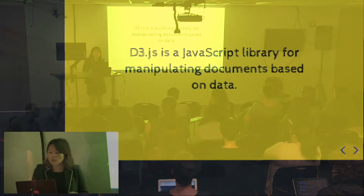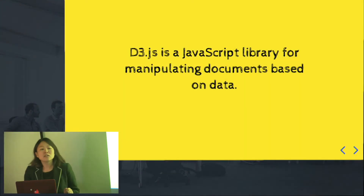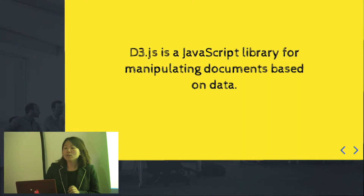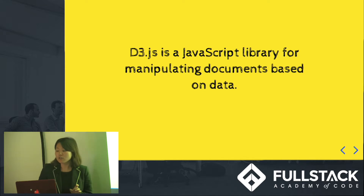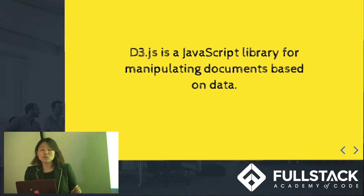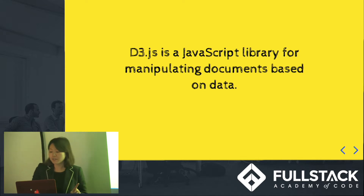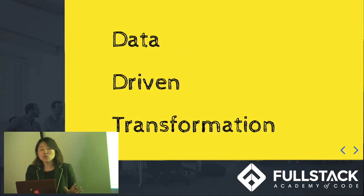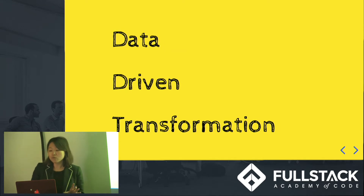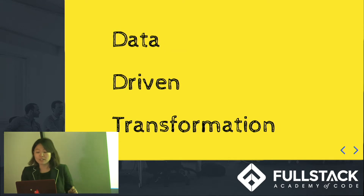What is D3? D3 stands for data-driven documents. It's a simple JavaScript library that allows us to bind data to DOM elements. So what does that really mean? Once you bind data to DOM, we can apply data-driven transformations.